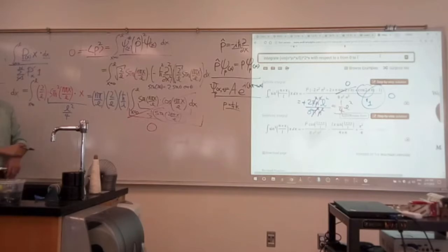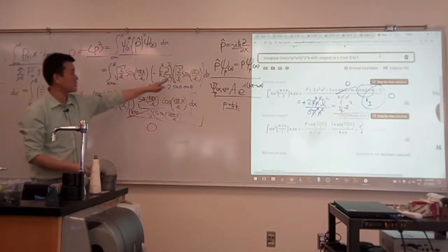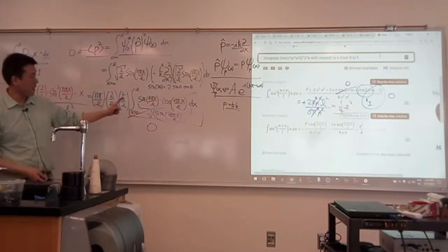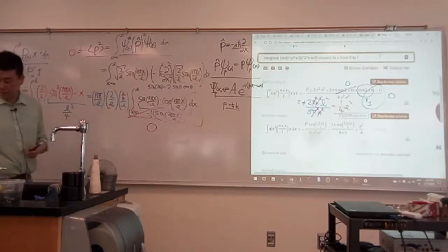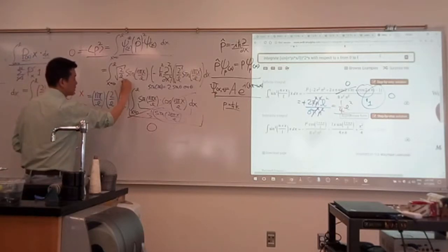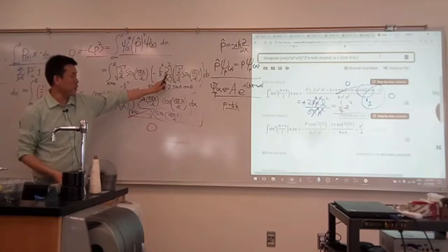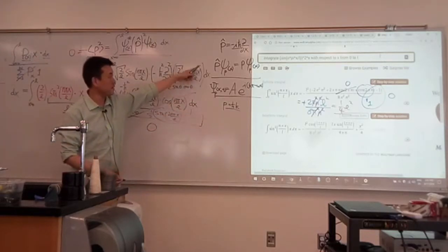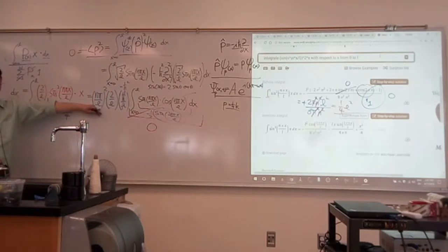Let me pull out the same factors as before. I start with 2 over L. Now instead of ℏ over i, what I have is minus ℏ². When I take this derivative twice, I pull out the factor of Nπ over L twice. So there's this squared: Nπ over L squared.